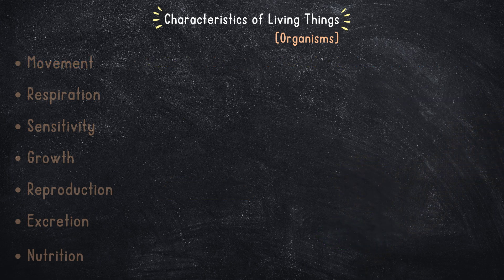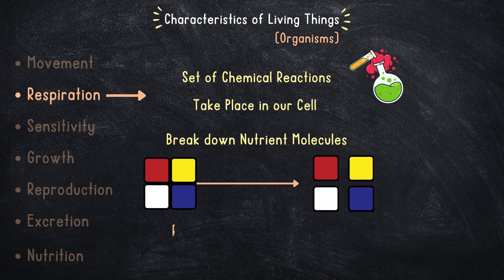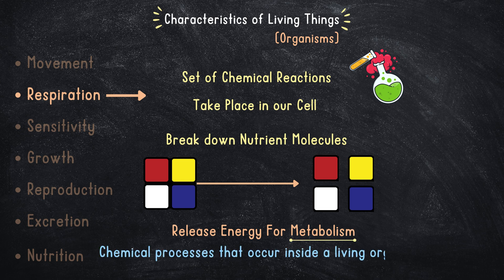Another essential characteristic is respiration. This is a set of chemical reactions that take place in our cells and break down nutrient molecules to release energy for metabolism. Metabolism refers to the chemical processes that occur inside a living organism and are essential for keeping them alive.